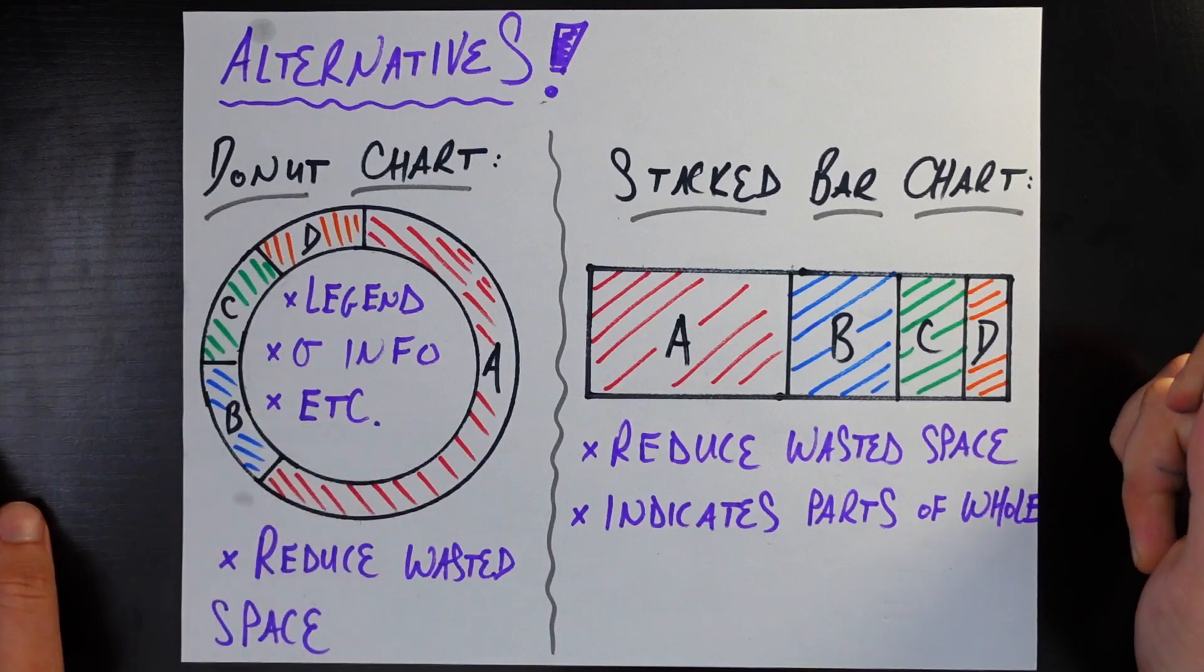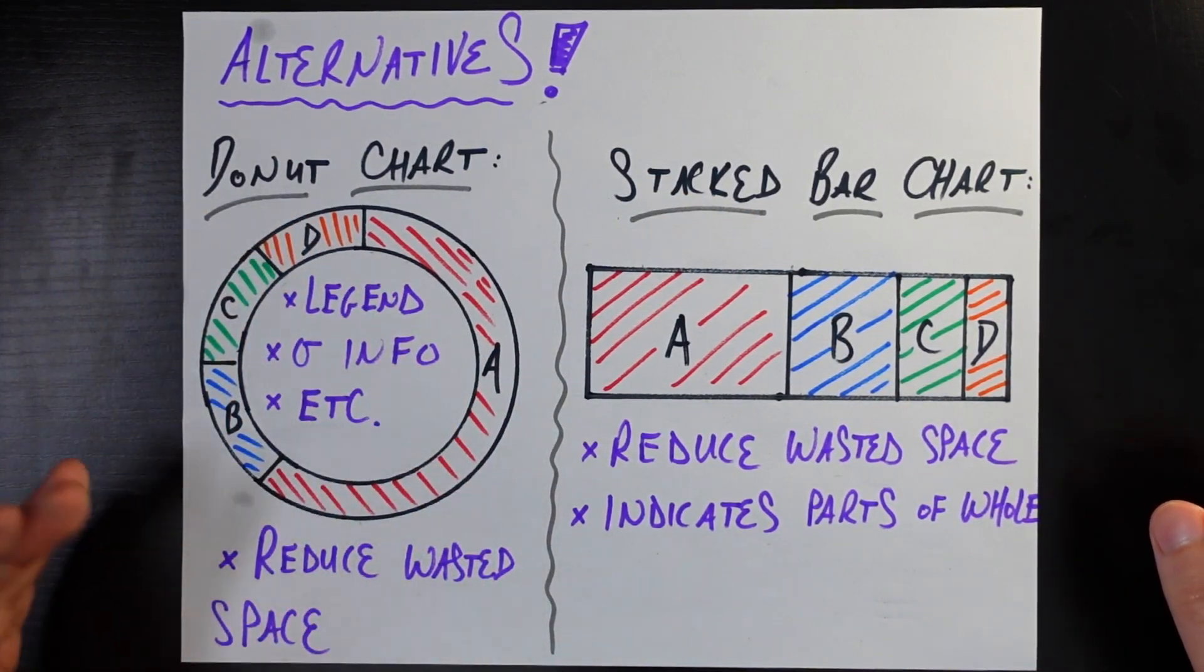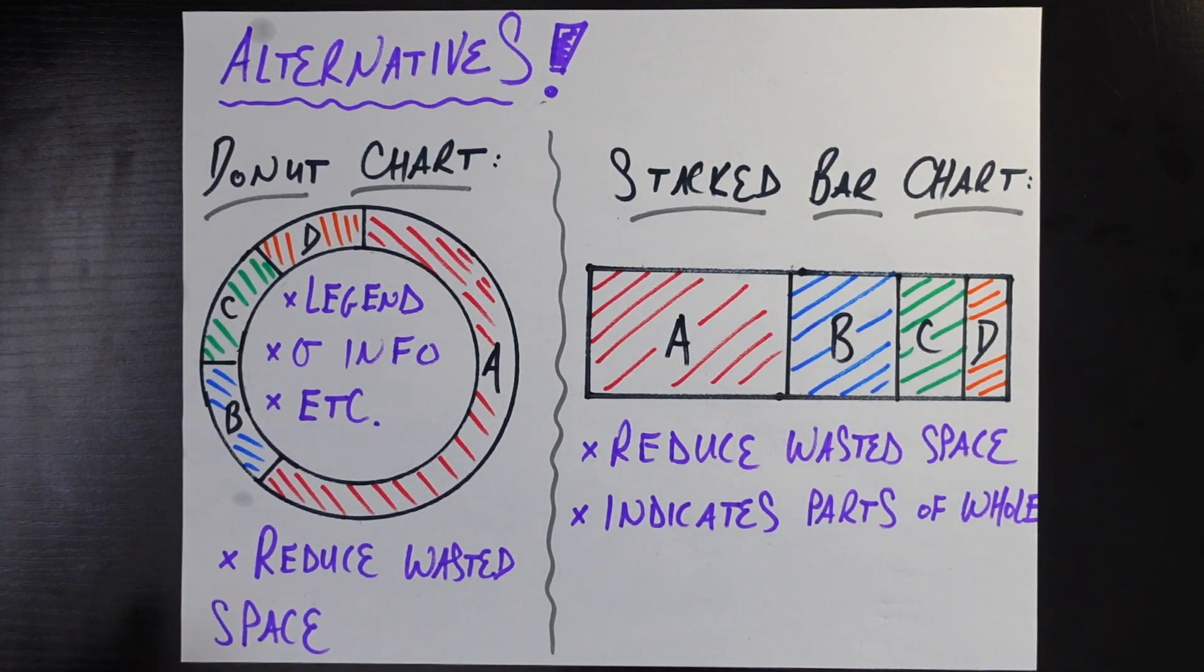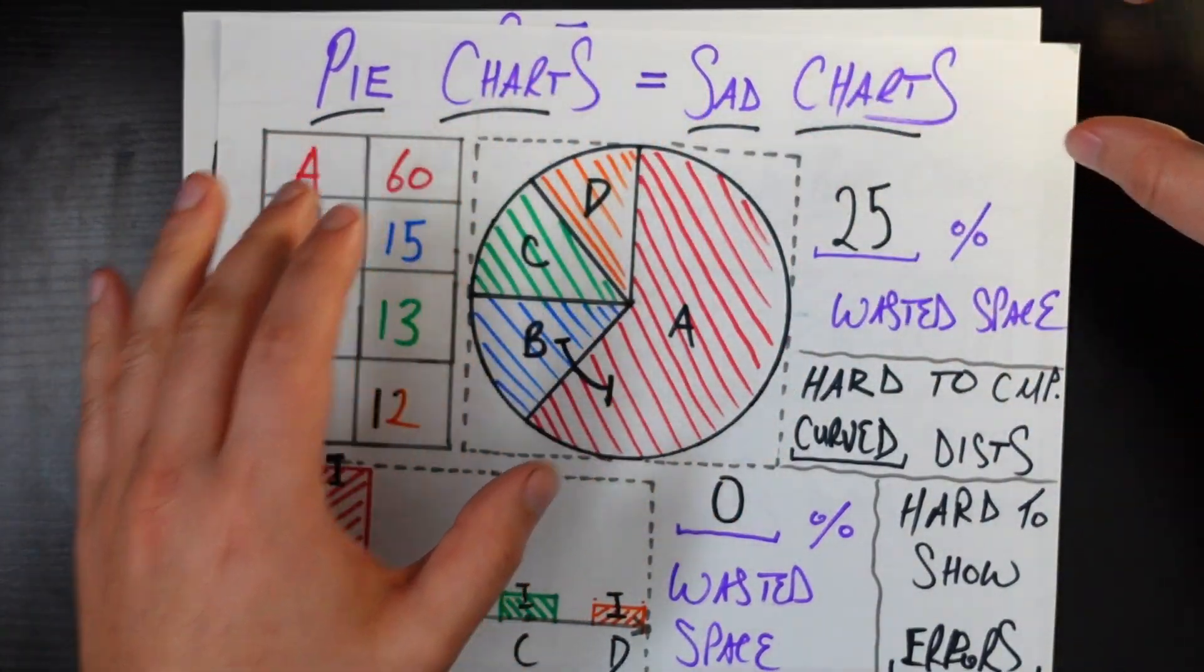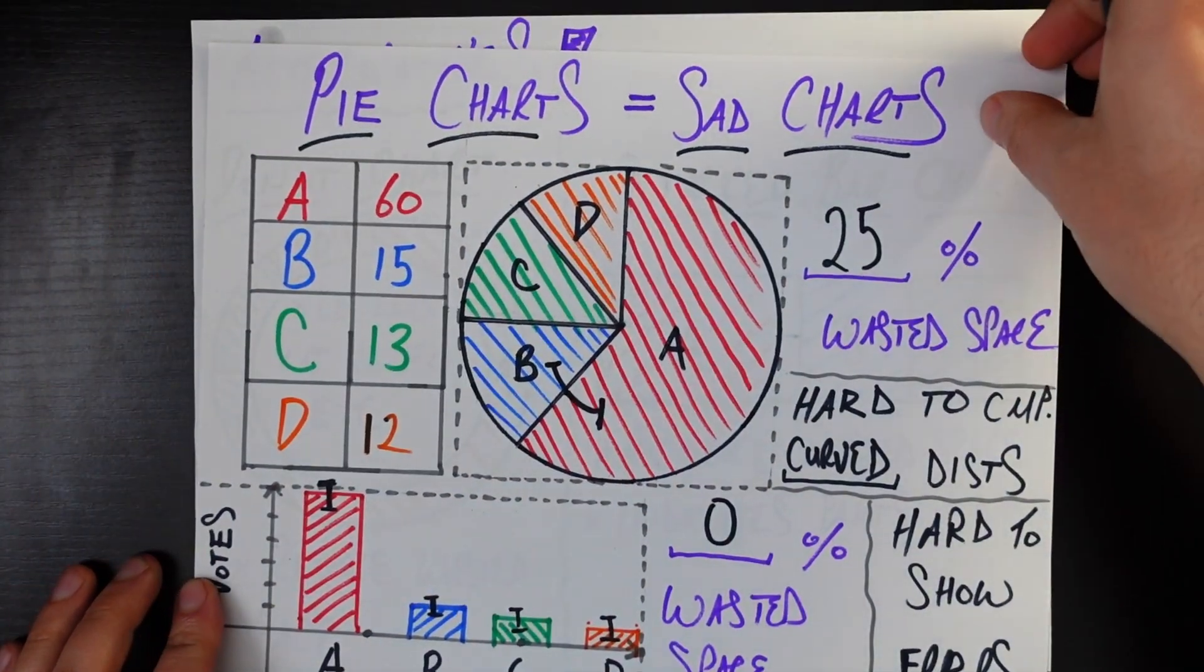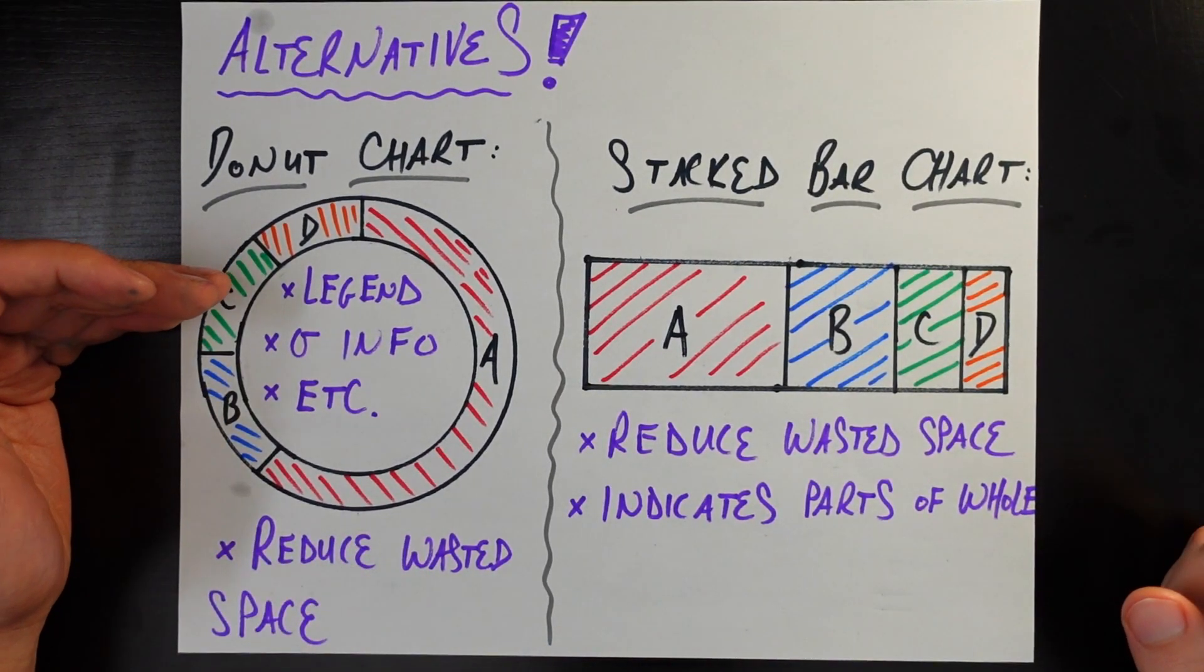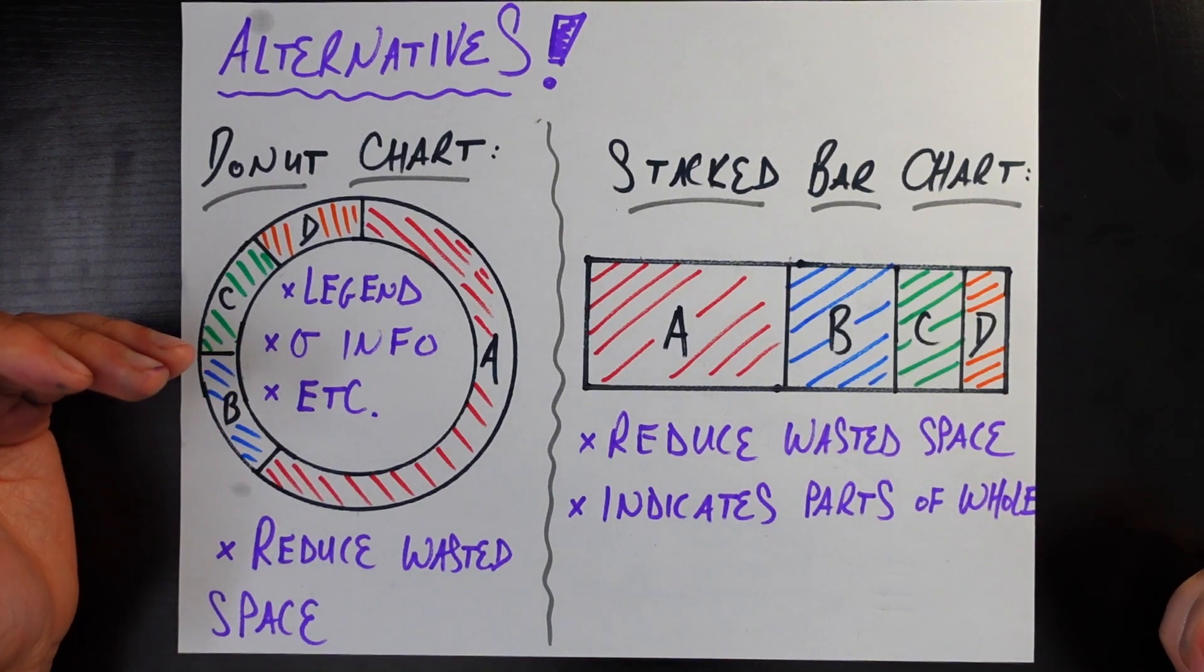And now I've created space inside of that donut to put whatever I want. For example, I could put a legend in here. You can see here, there's only four categories. But if there was like eight categories, it might be a little bit harder to label the letter on each one. So I could just put that little square legend on the inside. You can see that if I wanted to put a legend on a pie chart, I need to take up even more space, which would just make this wasted space issue that much worse. So a donut chart solves that. You can put the legend in there.